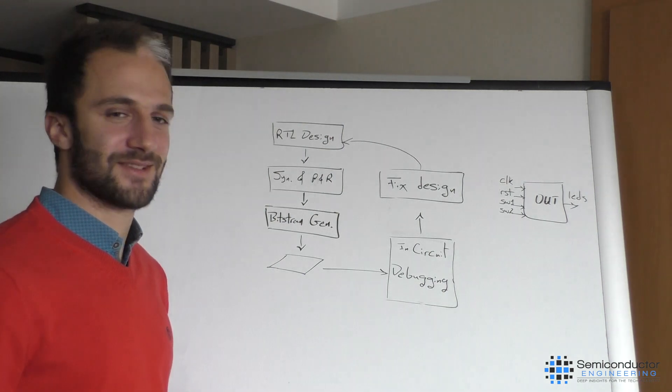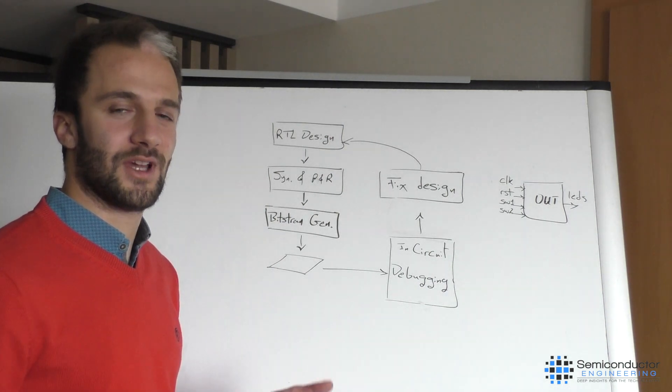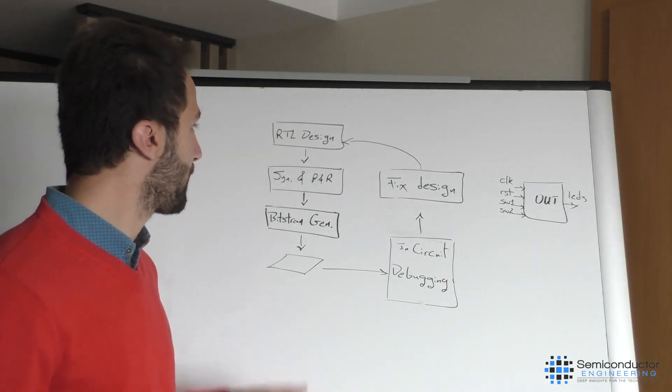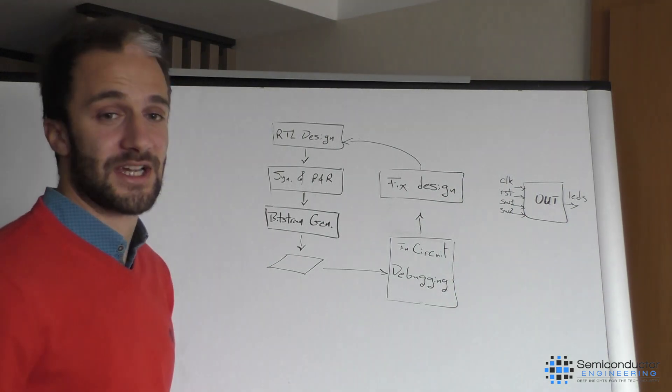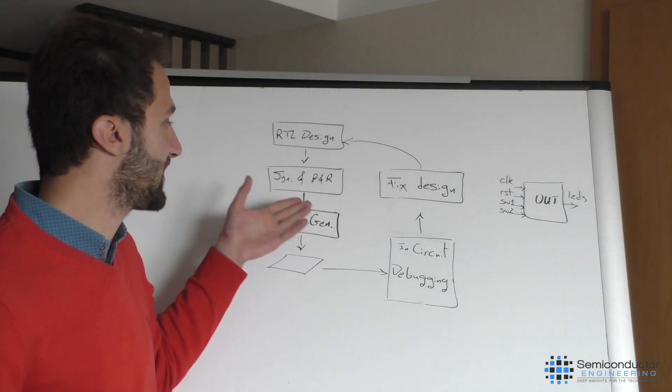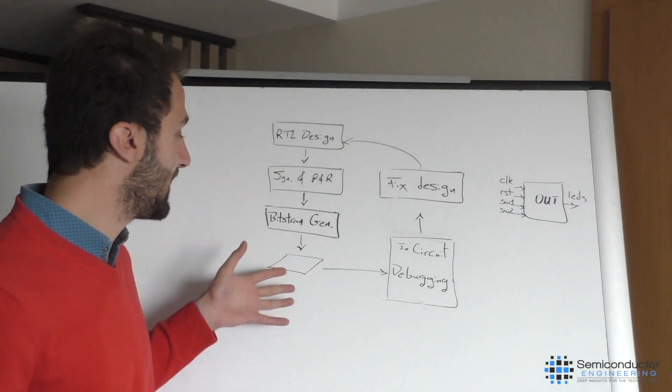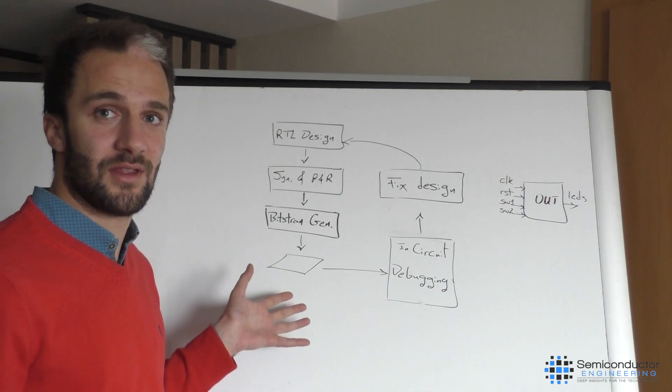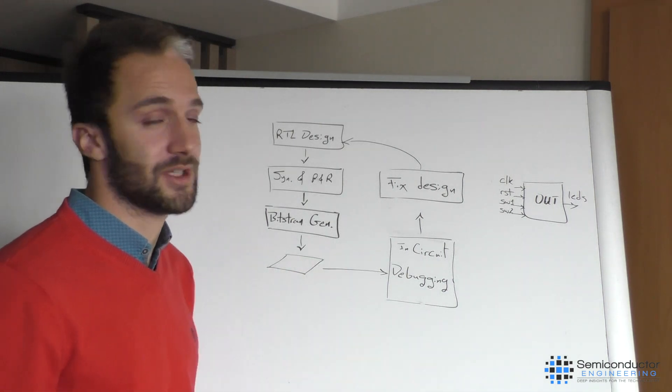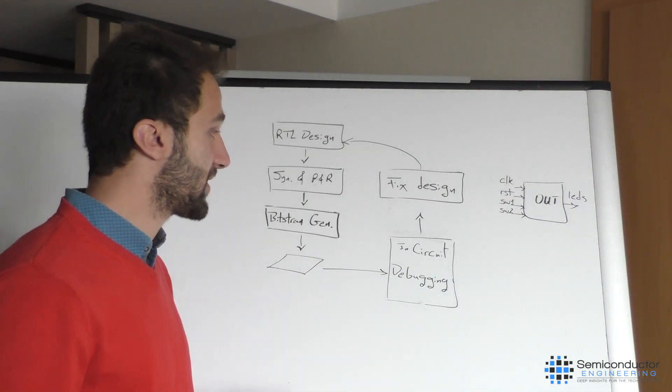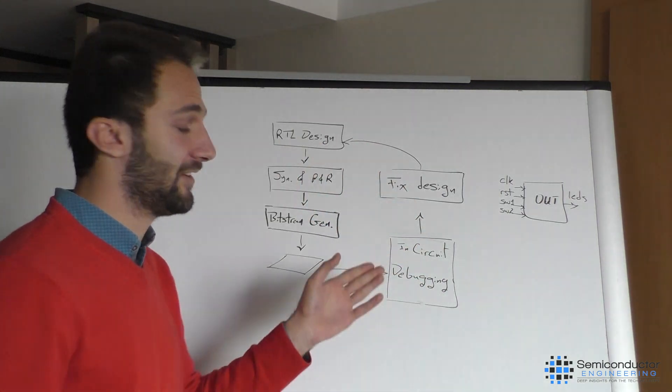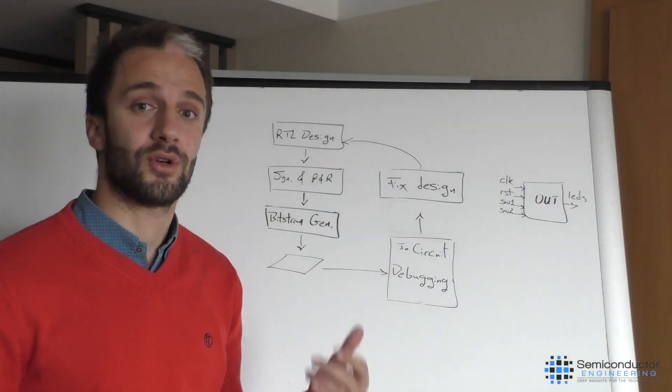What we are looking at here is the general flow of FPGA development. So we have an RTL design. We synthesize it, place and route it and generate a bitstream, program our device. And if we find bugs there, then we could do in-circuit debugging, fix the bug and iterate again through the flow process.